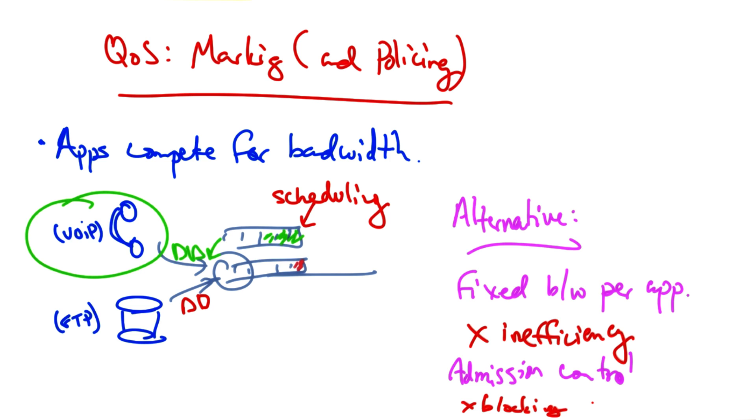This blocking, or the user experience that results from it, is a negative consequence of admission control, and is one of the reasons it's not commonly applied for internet applications.